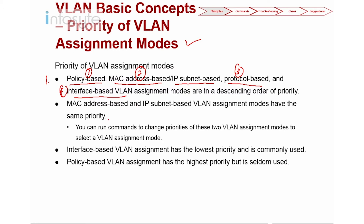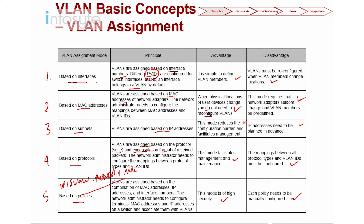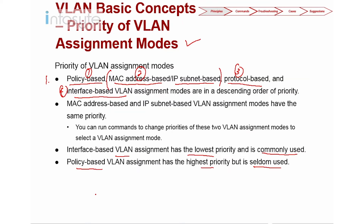MAC address and IP subnet assignment modes share the same priority, which is why they are both listed at second priority. You can run a command to change the priority of VLAN assignment modes. Interface VLAN assignment has the lowest priority and is most commonly used, while policy-based has the highest priority but is seldom used. Huawei switches support multiple VLAN assignment methods: interface-based, MAC-based, subnet-based, protocol-based, and policy-based.